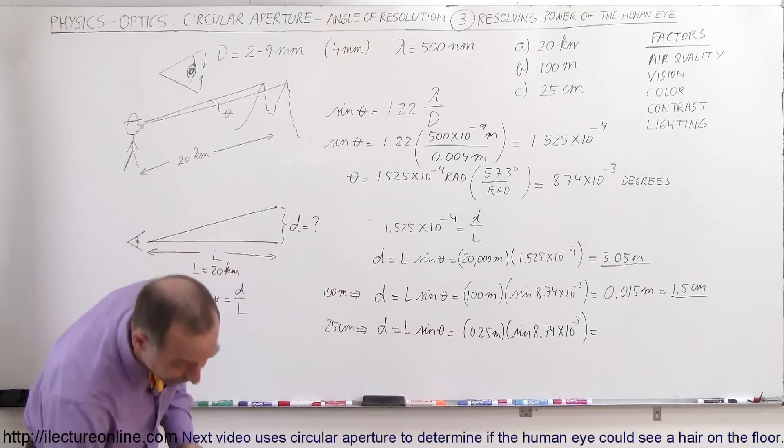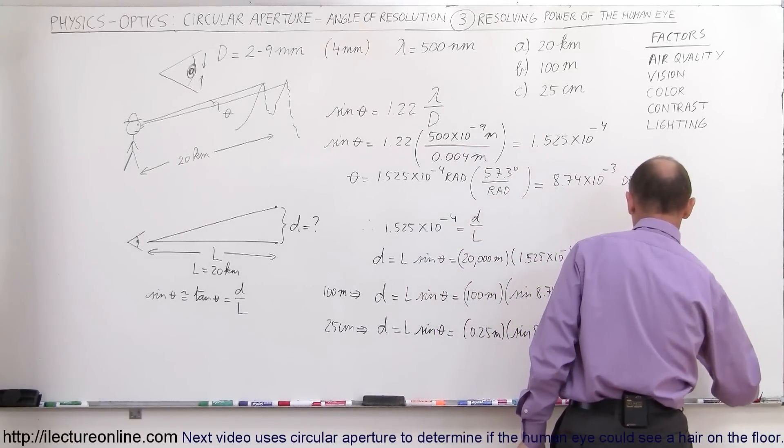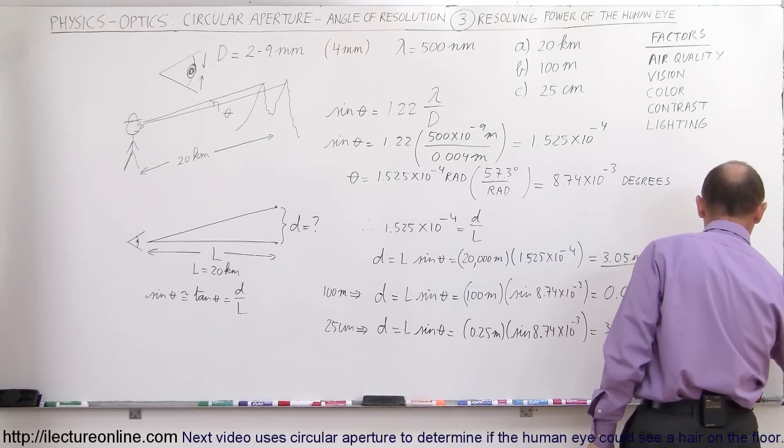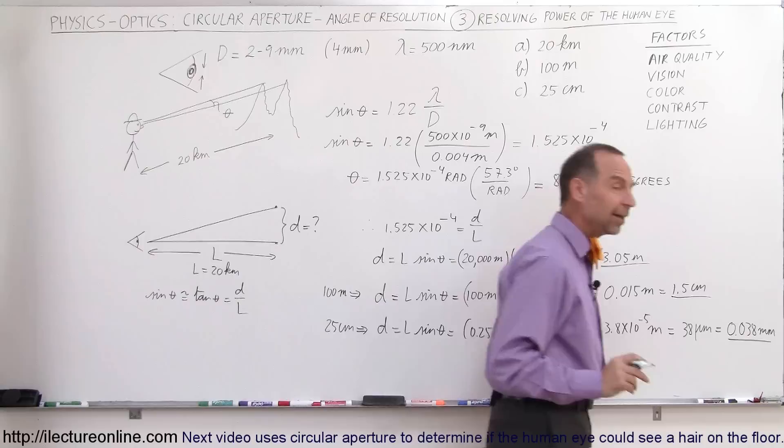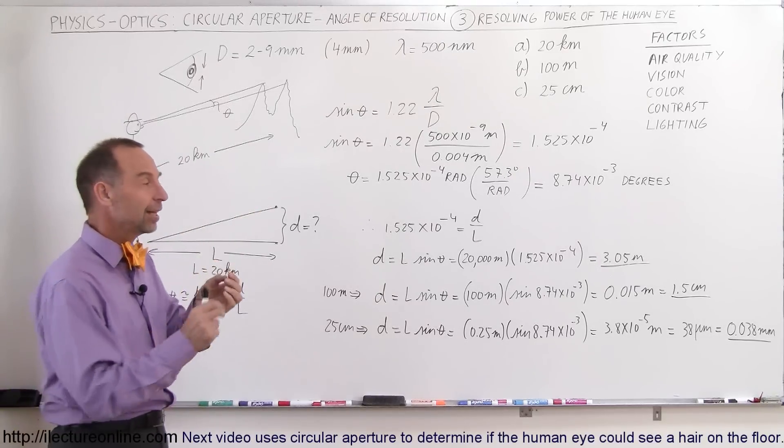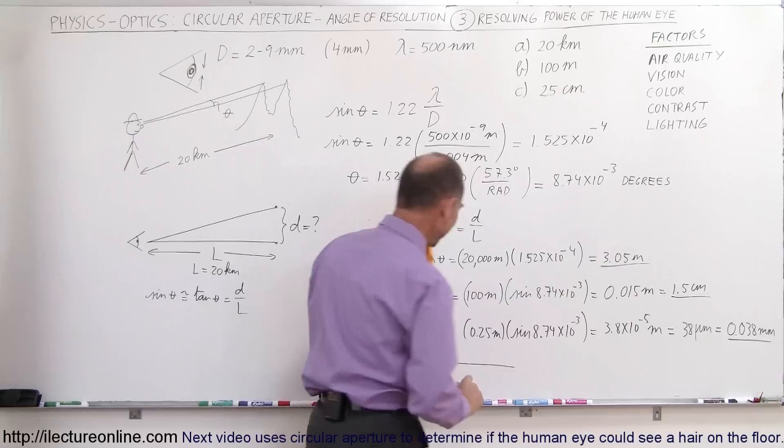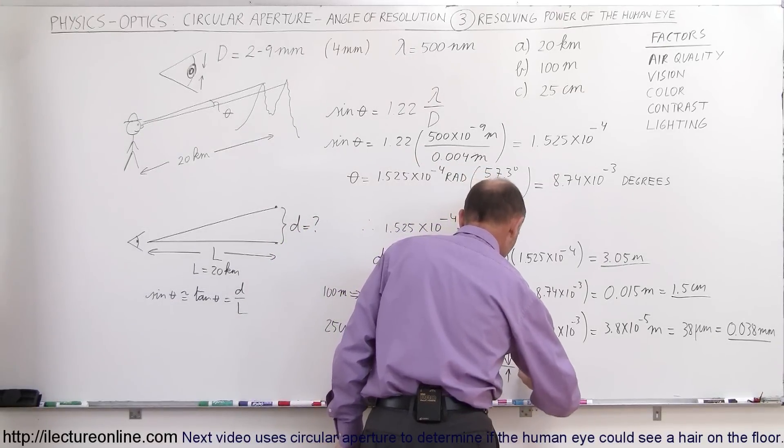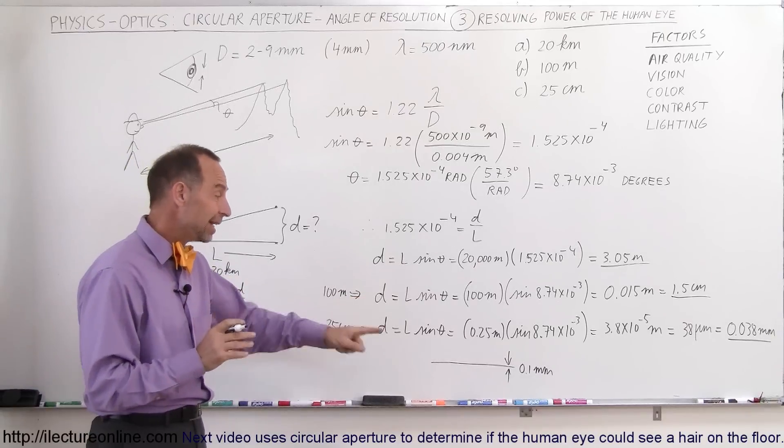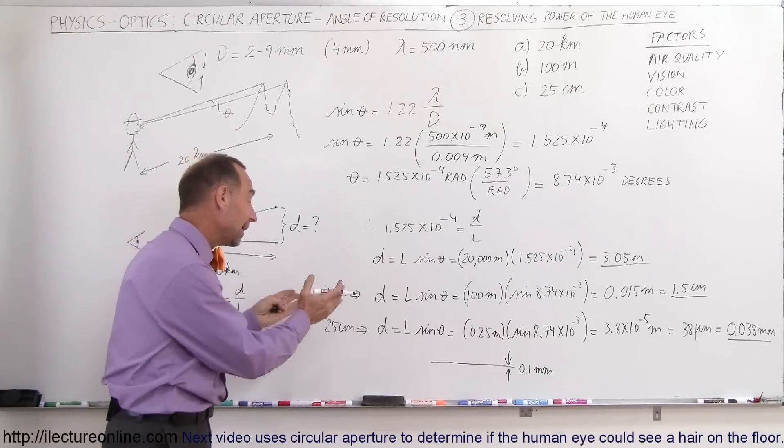Wow! 3.8 times 10 to the minus 5 meters. That's 3.8 times 10 to the minus 5 meters, which is equal to 38 micrometers, which is equal to 0.038 millimeters. Something slightly bigger than a third of a tenth of a millimeter. Wow! Why do I say a third of a tenth of a millimeter? Because I remember when I was a kid and I took drafting in school, I had a pen that had a line width of a tenth of a millimeter. So I was able to draw a line of a tenth of a millimeter in thickness. And sure enough, of course, 0.1 millimeter. And I had no problem seeing that. Not even the teacher with the older eyes could see that. Yet, what this is telling me, that if the line had a line width one-third of that, I should still be able to see it.